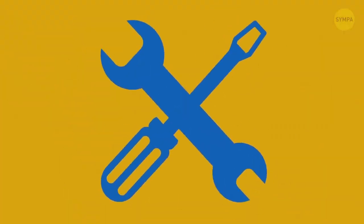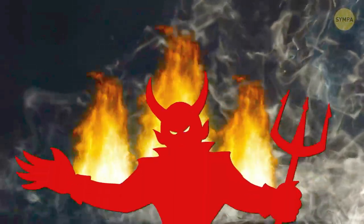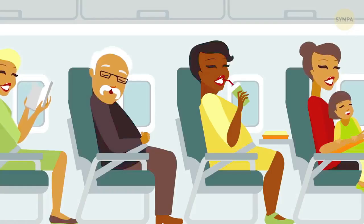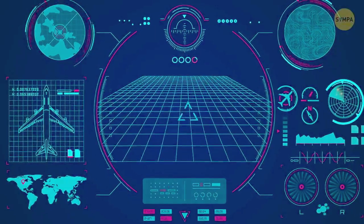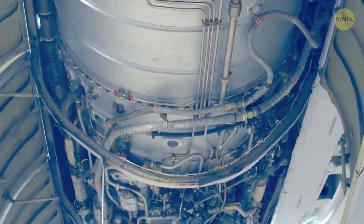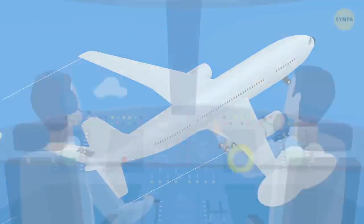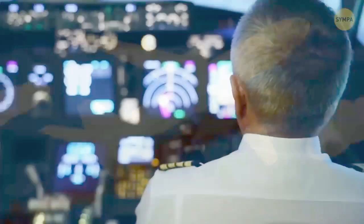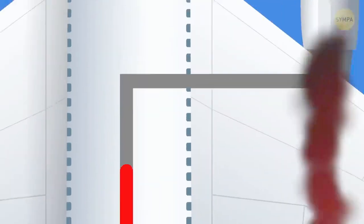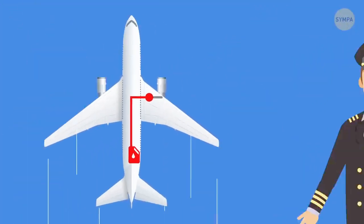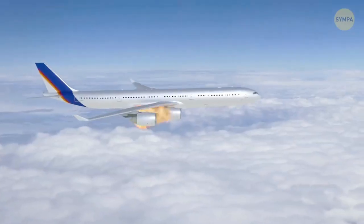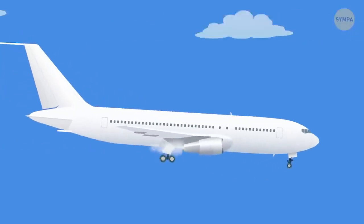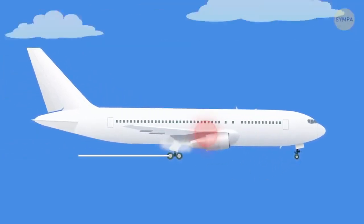Bien que ce problème ait finalement été corrigé, cela montre qu'un peu de fumée peut être très problématique, même pour des appareils militaires haut de gamme. Une extinction moteur peut également être causée par une défaillance de la pompe à carburant ou d'autres composants. Quelle que soit la cause, lorsqu'une extinction moteur se produit, la première action du pilote est de couper l'arrivée de carburant de la turbine défaillante, puis d'informer calmement les passagers pendant que l'équipage cherche à déterminer ce qu'il s'est passé.